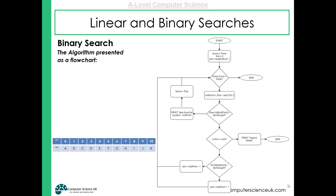Here is a flowchart demonstrating the logic of the binary search algorithm. We get the length of the list to know the upper bound, and the lower bound starts at 0. We find the midpoint by adding the upper and lower bounds and dividing by two. If the item is there, we've found it and can finish. If not, we check whether the item we're looking for is greater or smaller than the item at the midpoint. If greater, we update the lower bound to one more than the midpoint. If smaller, we update the upper bound to one less than the midpoint, then repeat.